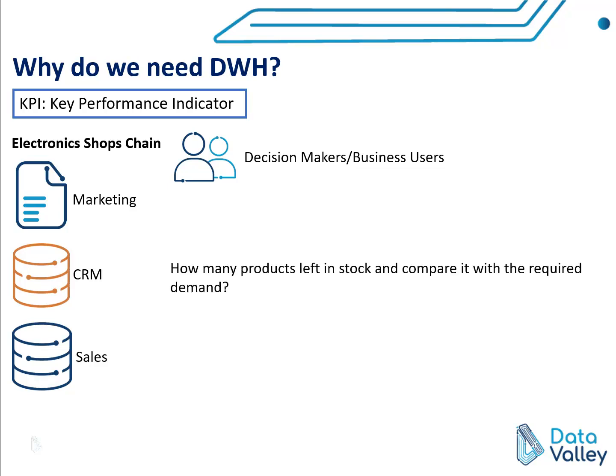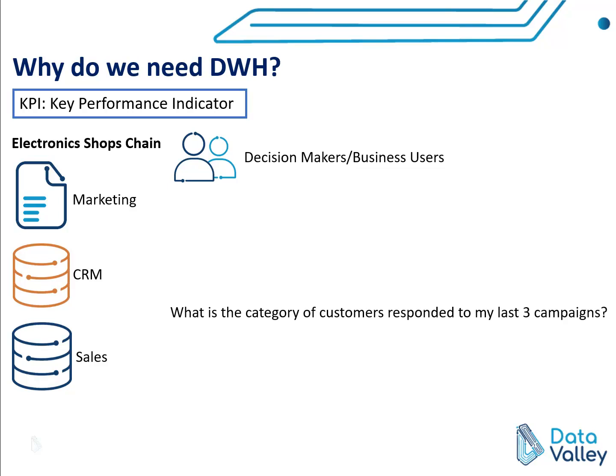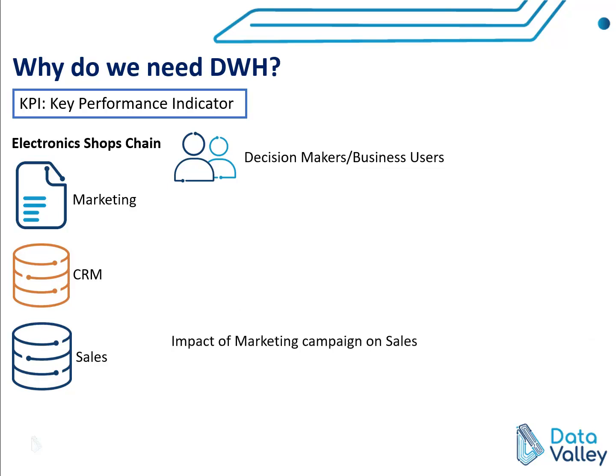Another KPI could be: how many products are left in stock compared to what is required? In this KPI we are checking demand against the products available in stock. Another question: what category of customers responded to my last three campaigns — perhaps segmented by purchase power — and what is the impact of marketing campaigns on our sales? For this we need to integrate information between marketing campaigns and sales data. As you can see, you cannot get all the KPIs you need from a single system. You have multiple systems and you need to integrate between them to get your KPIs, either in the performance category or to understand customer behavior.